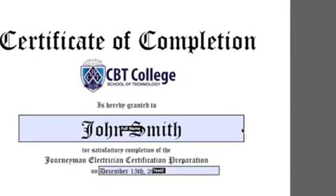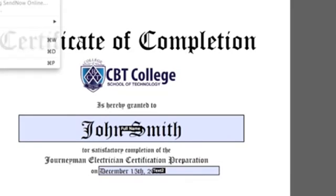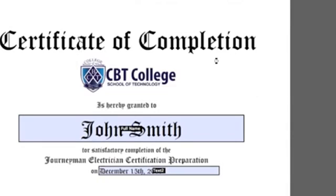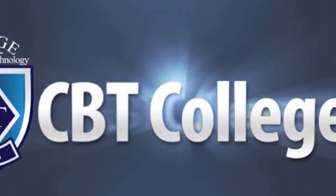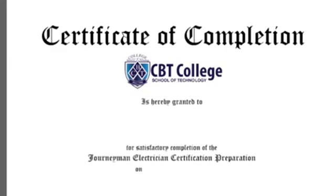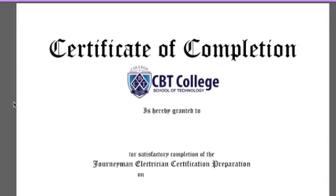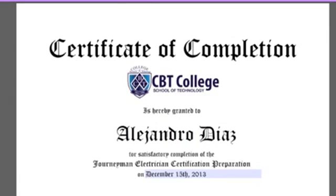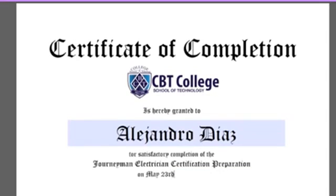Perfect. Once you have this, all you need to do is go to File > Save. And that's it. Here's the new editable PDF file. This is exactly what people will see right after they open the file. They will be able to change the name, they will be able to change the date, and most importantly, they won't be able to change the artwork. Thank you for watching. Hope this is helpful.